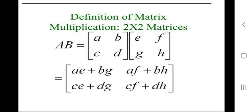Now, what is the multiplication of two matrices? The general statement is A multiplied by B. Matrix A has elements a, b, c, and d, and it will be multiplied with matrix B having elements e, f, g, and h. We multiply the first row of A with the first column of B: first row is [a, b] and first column of B is [e, g].